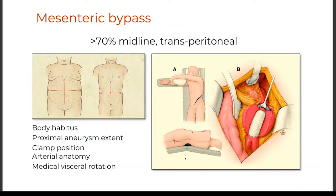In terms of mesenteric bypass, at least at the Mayo Clinic this was the favorite option for open revascularization. It was usually done with a midline incision, transperitoneal approach; sometimes bilateral subcostal incision; less frequently retroperitoneal approach. The selection of incision was largely based on body habitus, the source of inflow for the bypass, and the presence of other concomitant aortic pathology such as an aneurysm or coarctation.